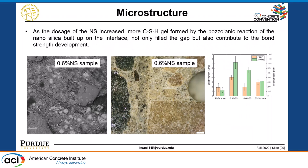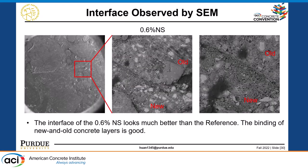A TGA result was used to evaluate the influence of nanosilica on the CH content, which kind of verifies our theories. Another set of images shows the 0.6% nanosilica: the interface was very compact and dense. We believe that with the higher dosage of nanosilica, we have more pozzolanic reaction, more C-S-H gel, which not only fills the gap but also develops a higher bonding strength.